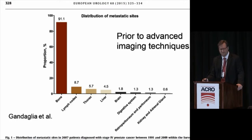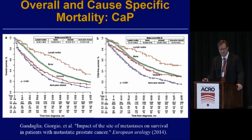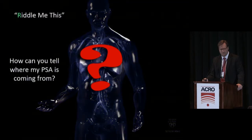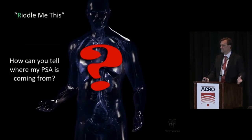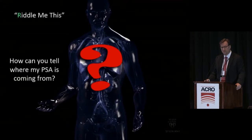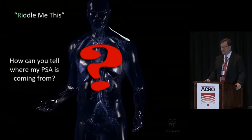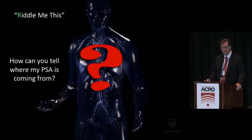Cause-specific survival data shows that patients with local and/or nodal recurrence versus retroperitoneal recurrence can have survival out to five years of 80%, which is quite high. Skeletal bone metastasis has worse survival, and visceral metastasis is even worse. Another study shows long-term survival based on metastatic spread sites with lymph nodes having the best prognosis, followed by bone, and then visceral involvement.